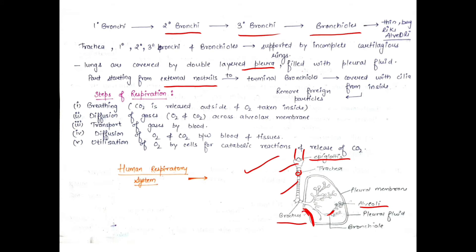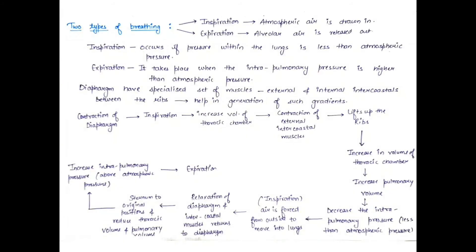As we saw in our previous lesson, the heart is present on the left side, which is why the left lung has a depression. The lungs are covered by a double-layered pleural membrane filled with pleural fluid, which prevents the lungs from any shock. In humans, there are two types of breathing: inspiration and expiration.